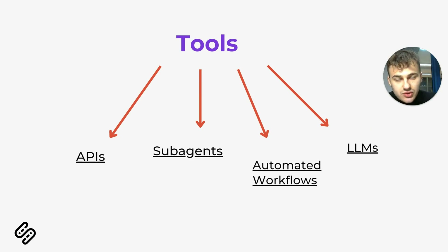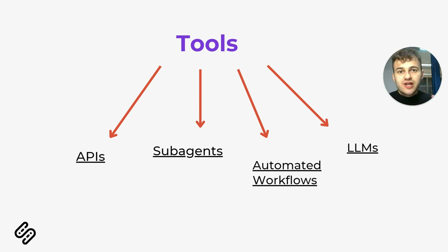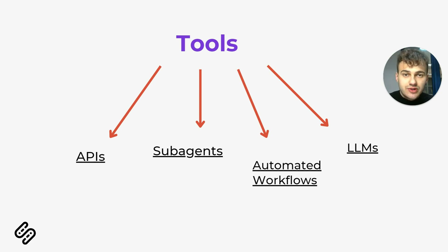You can provide APIs to allow your agent to interact with external systems. This can include sub-agents that perform one specific task, or automated workflows. An AI agent can use your automations created in Zapier, Make.com, N8N, or even other LLMs. In certain cases, if you need Grok or Anthropic models, you can add this functionality and the agent will use it in specific cases as prompted.